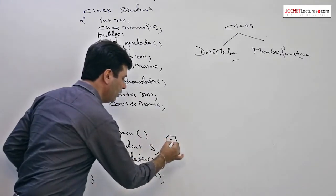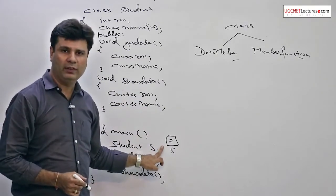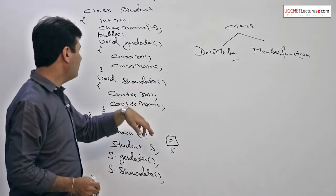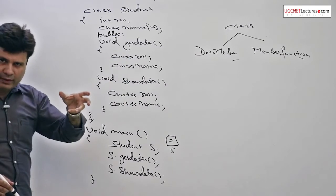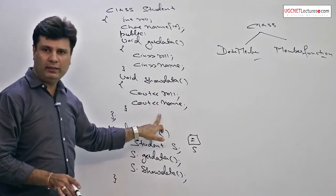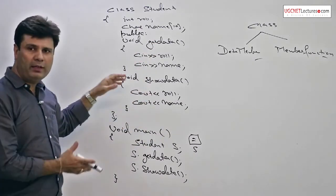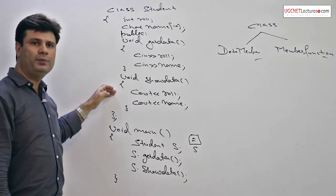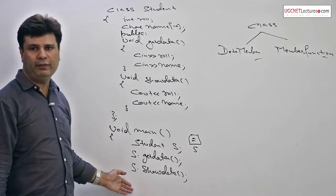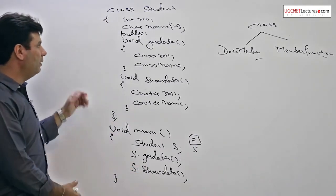So now, s dot get data will input the value, s dot show data you will have a value on the screen. Here one thing I want to tell you: in case of structure you provide an object reference, a structure variable reference, so called s dot role, s dot name. But in case of classes, nothing is there, no reference is required. The reason why? Because get data and show data both have become member functions. So within a member function, no object reference is required. Here we are calling a function, so function definitions require object reference. This is a simple example of classes.